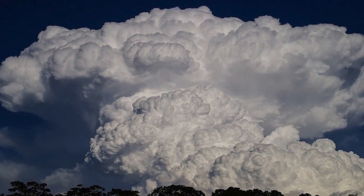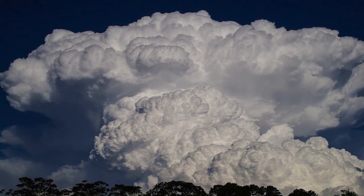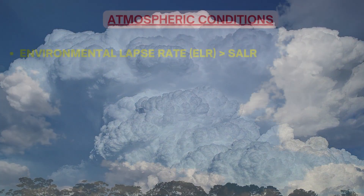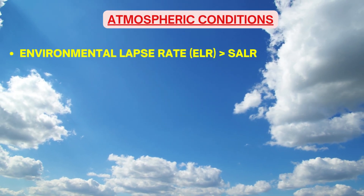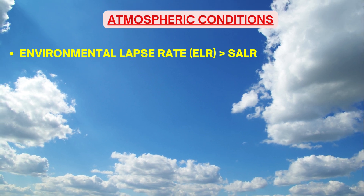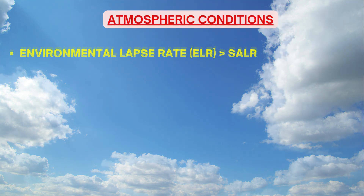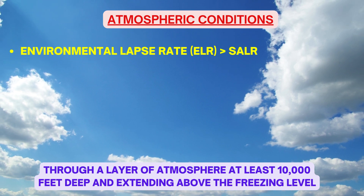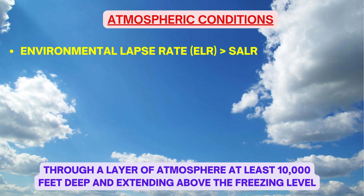What makes a large CB cloud form in the atmosphere? There are three atmospheric conditions which lead to formation of thunderstorm. The first is an environmental lapse rate greater than the saturated adiabatic lapse rate — that is, absolute instability in the atmosphere — through a layer of atmosphere at least 10,000 feet deep and extending above the freezing level.